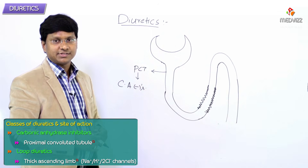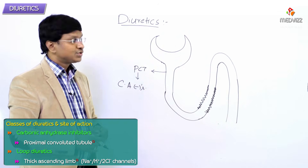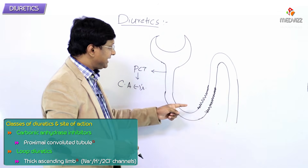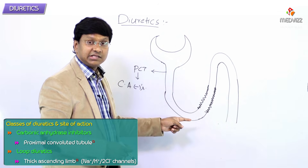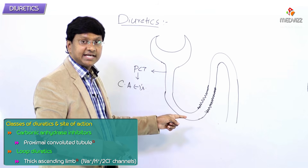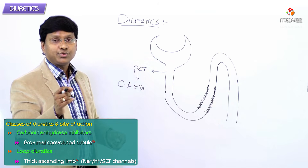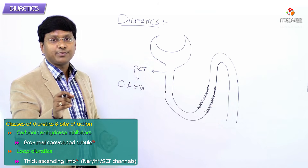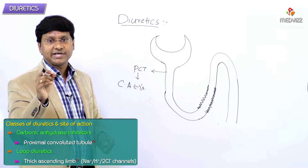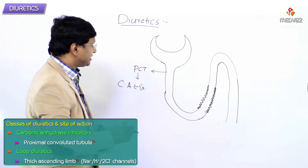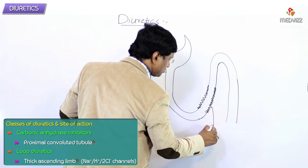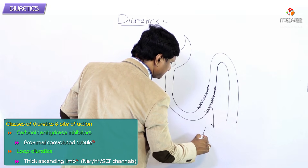So in the thick ascending limb, where you have the sodium-potassium-2-chloride channels, that is where the loop diuretics will act.